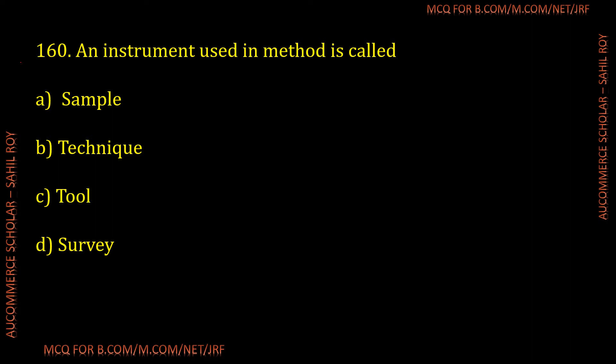Question number 160: An instrument used in a method is called what? The correct answer is tool — Option C is the correct answer for the given question.